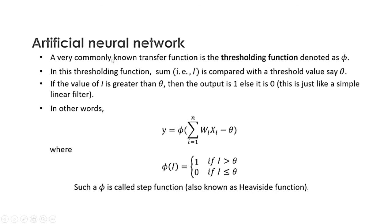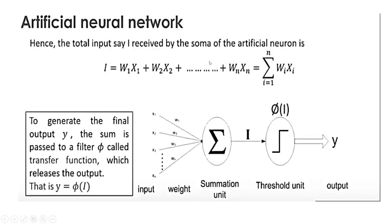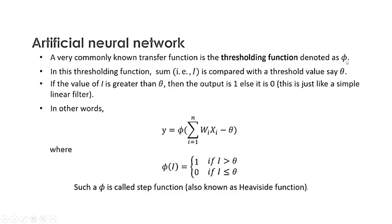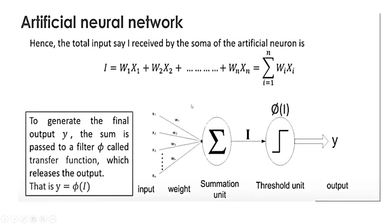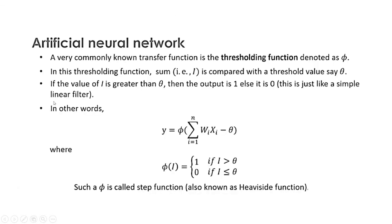A very commonly known transfer function is called the thresholding function, also denoted by phi. In the thresholding function, I is the sum of all input-weight products. If the value of I is greater than theta, the output is 1; if I is less than or equal to theta, the output is 0.